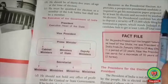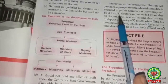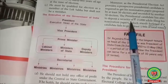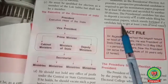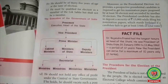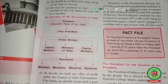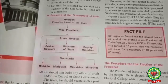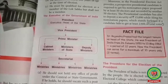As the Presidential Election Act provides, a prospective presidential candidate is required to get his nomination paper proposed by at least 50 electors and seconded by another 50 electors. The presidential candidate has also to deposit a security of Rs 15,000 while filing his nomination papers, which stands forfeited if a candidate fails to get at least one-sixth of the total votes.